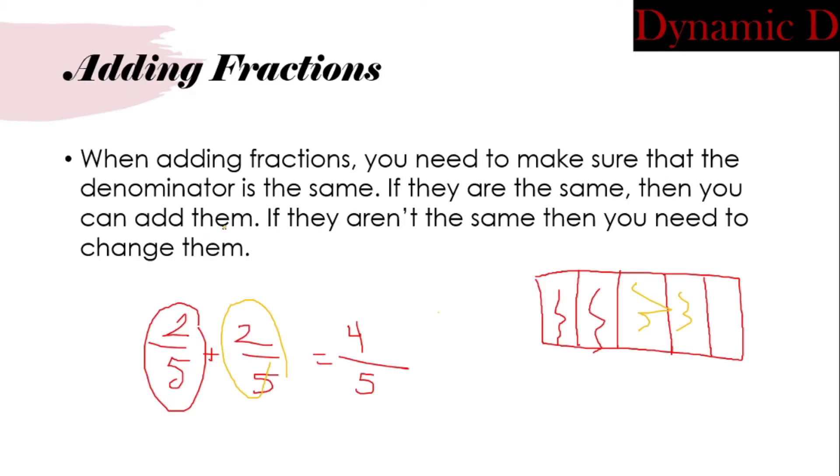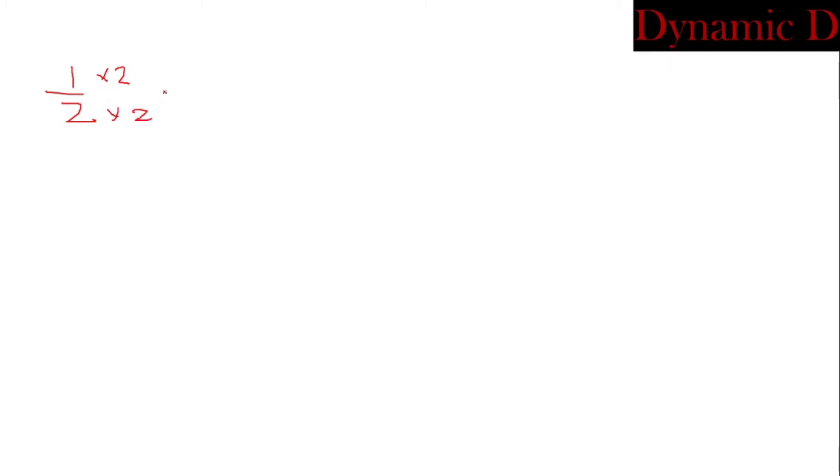Let's explain what to do if they're not the same. We know that a fraction like one-half can change. If we multiply the numerator and denominator by two, we can get two-fourths.